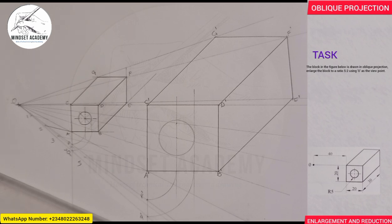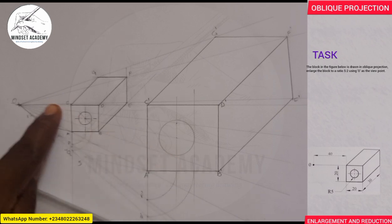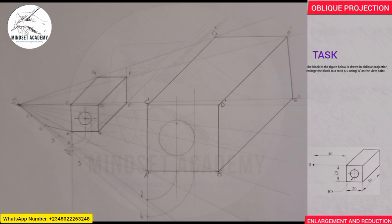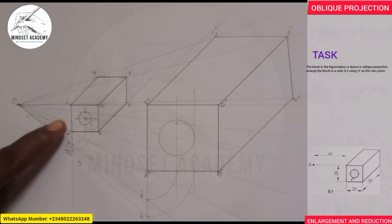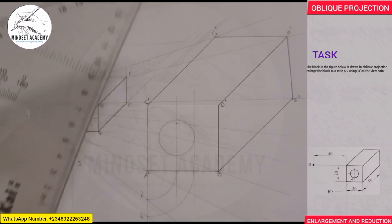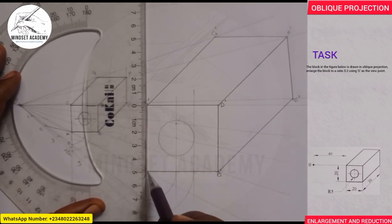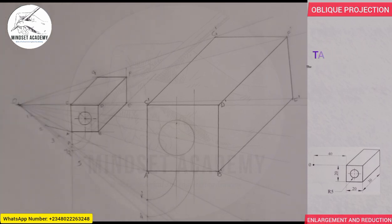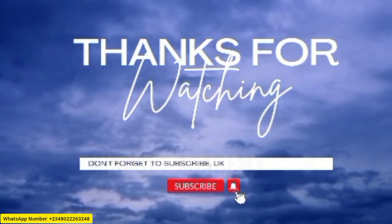We have successfully enlarged the given figure. Let's confirm it is correct: from A to C in the original is 20. Applying the ratio 5 over 2 times 20 gives 100 divided by 2, which equals 50. So from the original 20, the enlarged measurement should be 50. Measuring from O on the enlarged figure, we confirm it is 50. That verifies our enlargement is correct. If you found this video helpful, please don't forget to like, subscribe, and share. Thanks for watching.